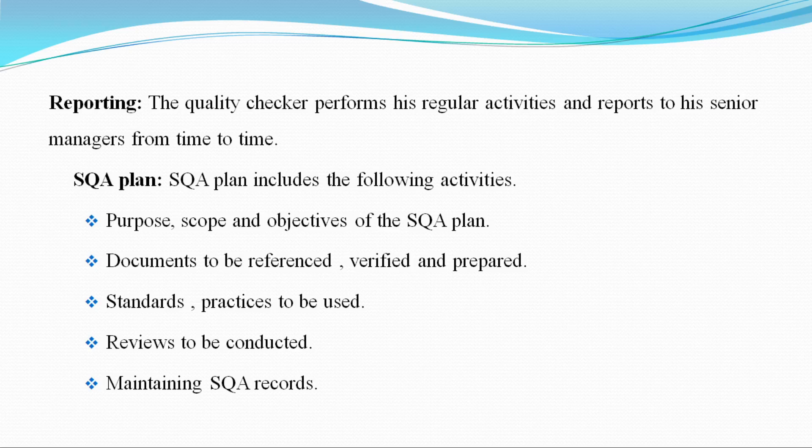The quality plan includes the following activities. The Software Quality Assurance plan starts with development activities. In the SQA plan, the activities include the purpose, scope and objective of the SQA plan — that is, how you use the SQA plan, what its scope and objective are — as well as documents to be verified, referenced and prepared.